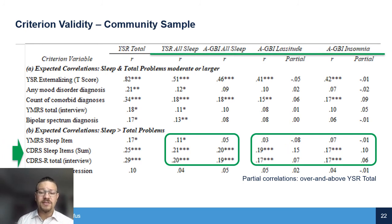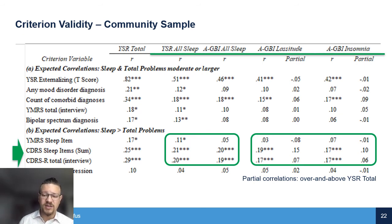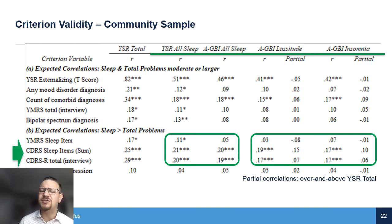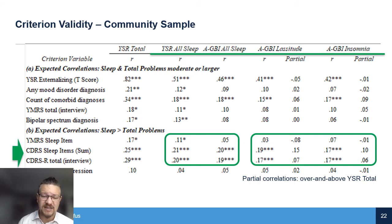Similarly in the community sample, we see those associations — convergent evidence of validity with CDRS and YMRS sleep items — although the correlations are somewhat attenuated for the mood disorder-specific diagnoses.